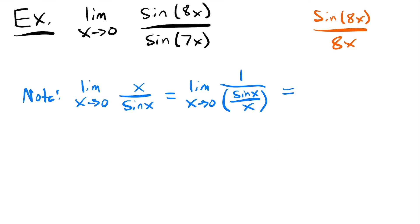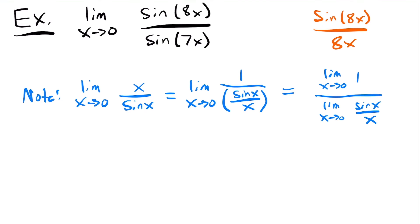We can write this as the limit as x→0 of 1 divided by the limit as x→0 of sine x over x — using our limit property that the limit of a quotient equals the quotient of the limits, as long as the denominator isn't zero. The limit of the constant 1 is 1, and our special limit gives 1 on the bottom, so this equals 1/1 = 1. So not only is the limit of sine x over x equal to 1, but so is x over sine x, its reciprocal — and we can use that here.